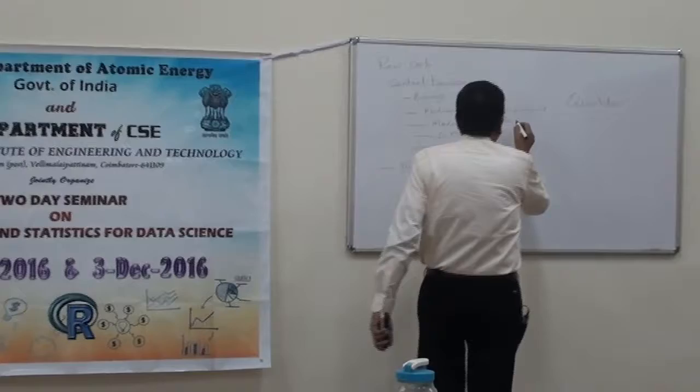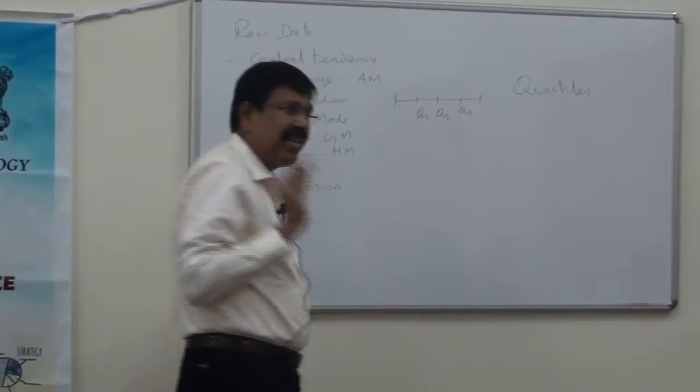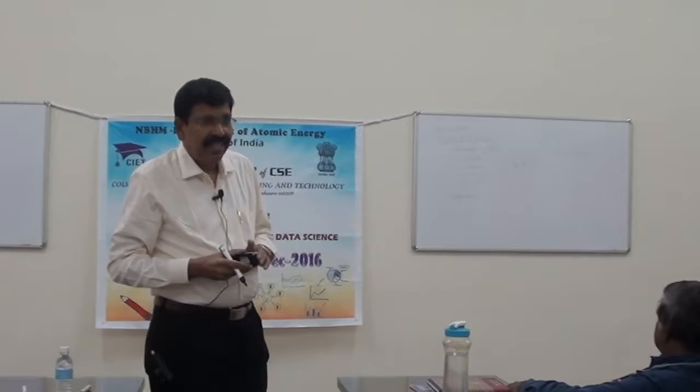This is Q2, and Q3 is the value below which 75% of the marks the students have scored. This is called quartiles.